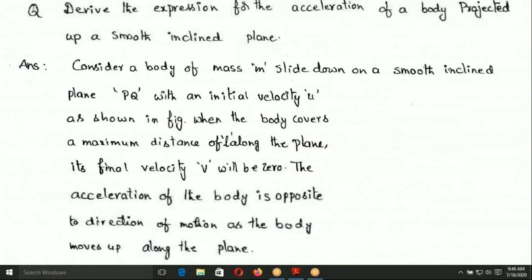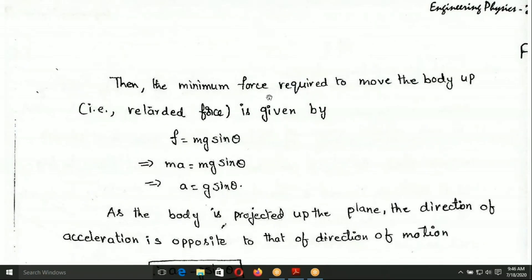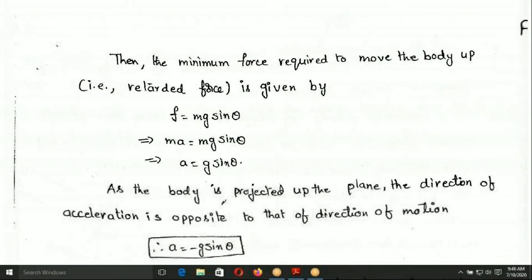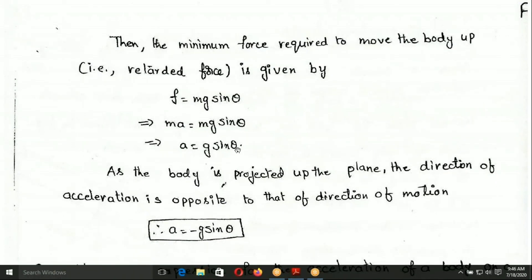The final velocity V will be zero. The acceleration of the body is opposite to the direction of motion as the body moves up along the plane. The force is given by F is equal to Mg sin theta. By Newton's second law, MA is equal to Mg sin theta, so A is equal to g sin theta.